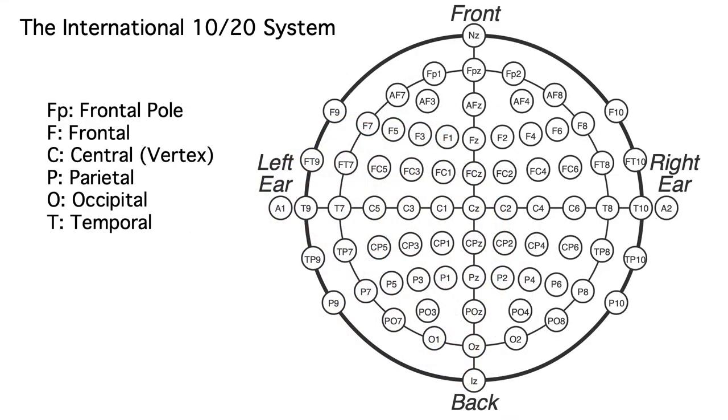Each electrode name begins with one or two letters indicating the general region of the brain, such as FP for frontal pole or O for occipital. These letters can be combined for in-between regions, such as PO for electrodes near the parietal occipital border.